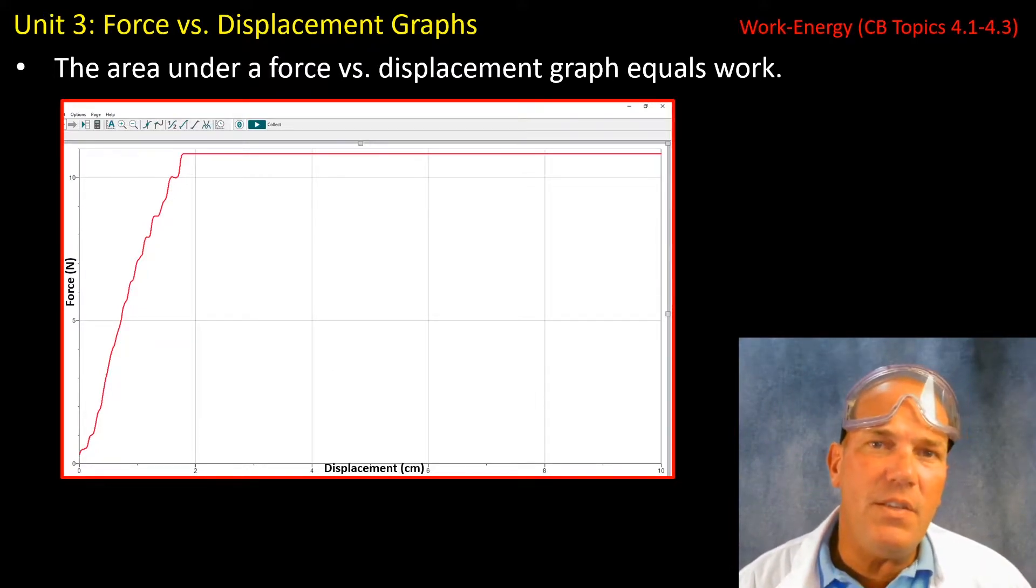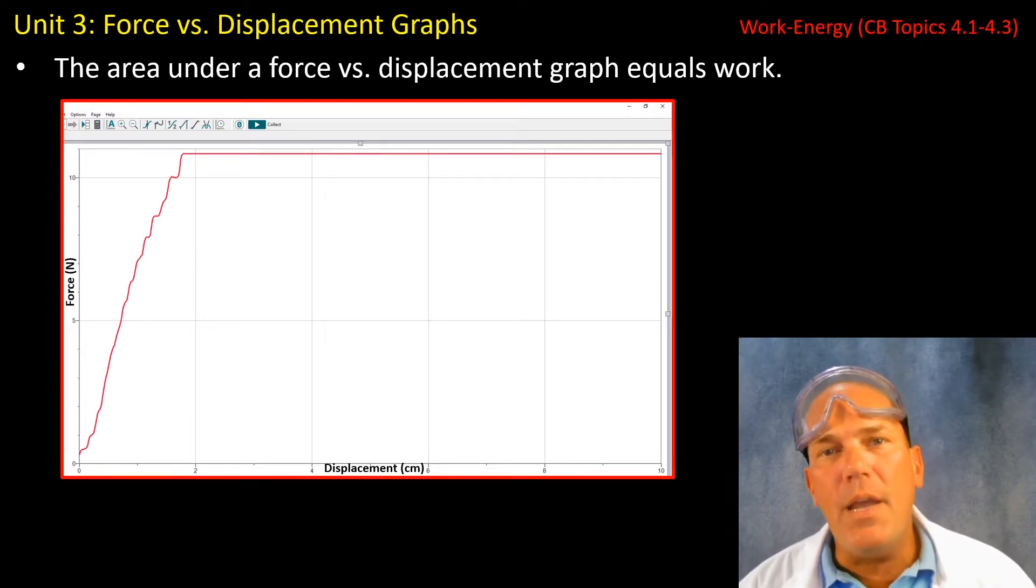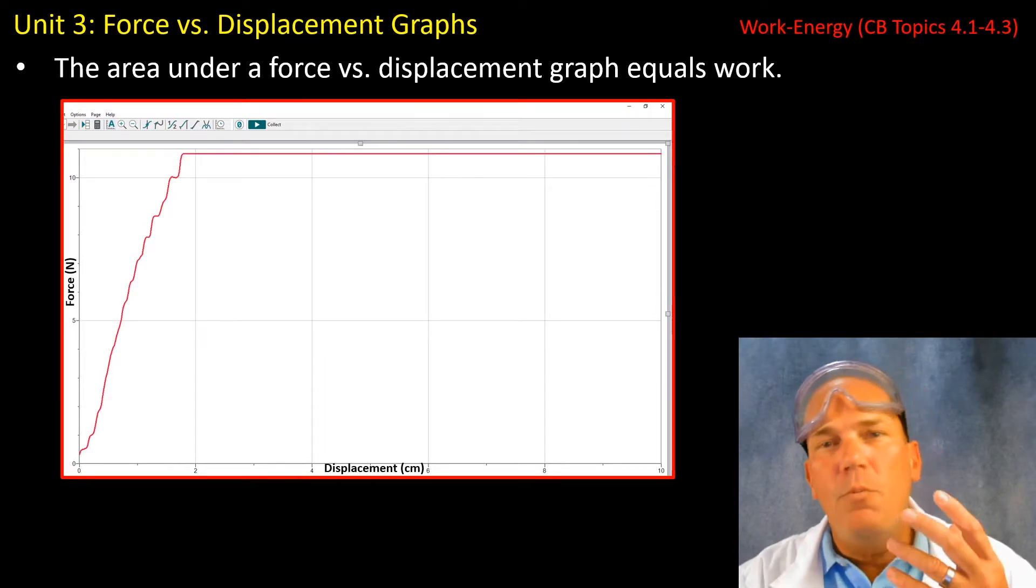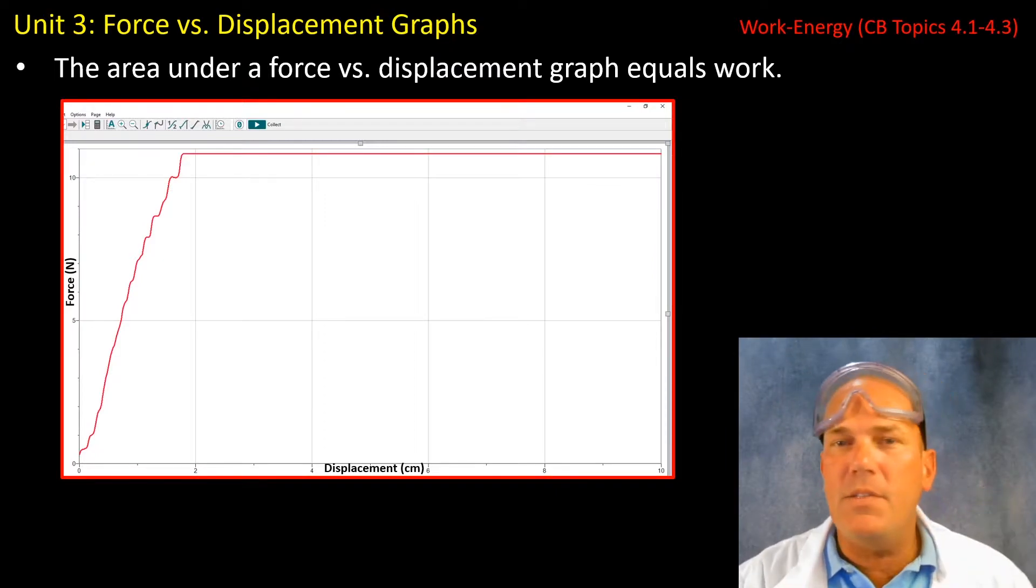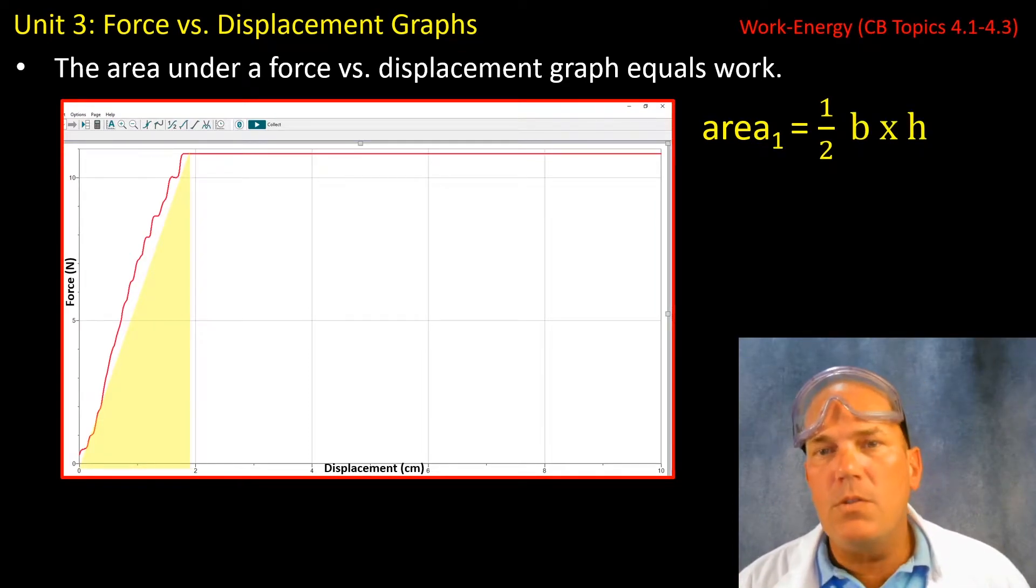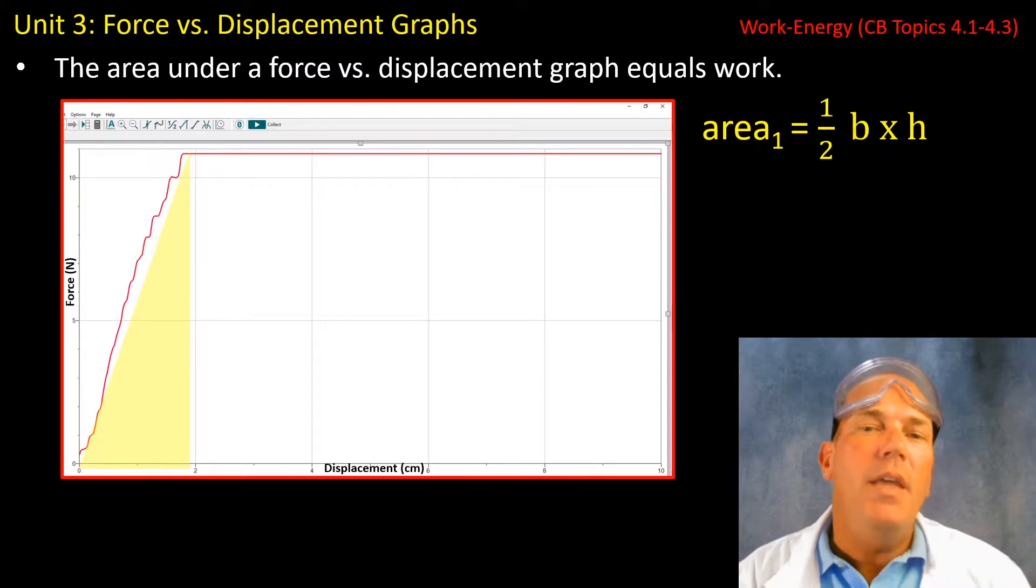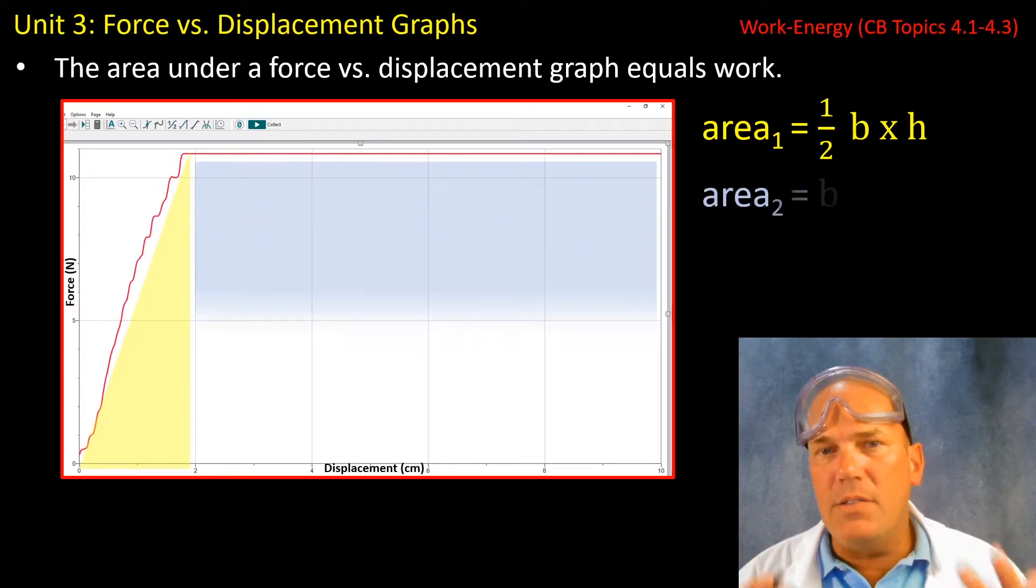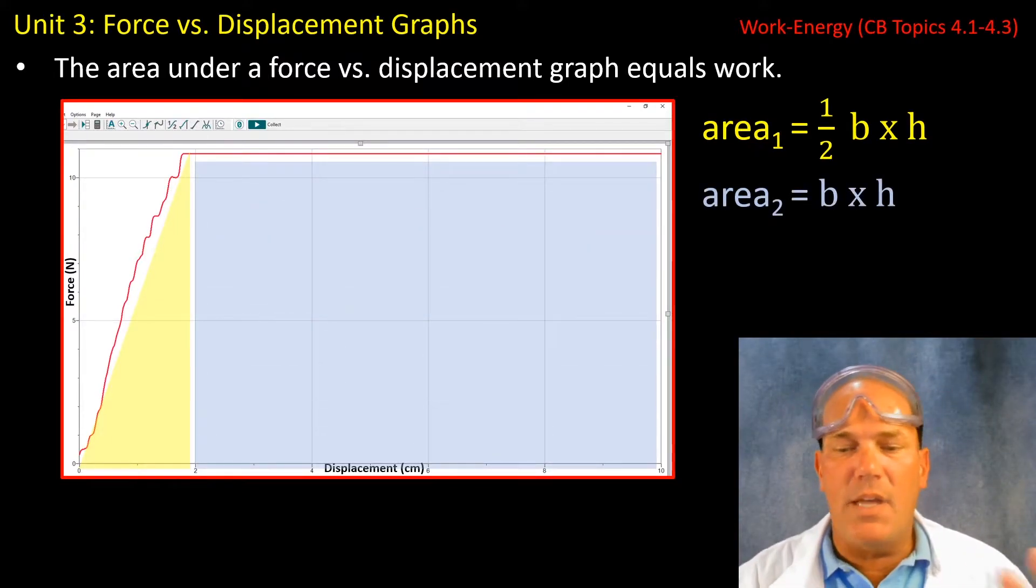We can still approximate the area under this graph without the use of calculus. We can do this by approximating the first area, area one, as a right angle triangle. So we can say one half base times height and the remaining area as a rectangle or base times the height.